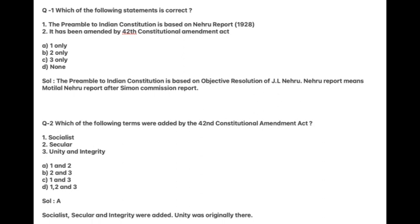Which of the following terms were added by the 42nd Constitutional Amendment Act? Options: Socialist, Secular, Unity, and Integrity. Answer is A. Socialist, Secular, and Integrity were added. Unity was originally there in the Preamble.